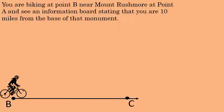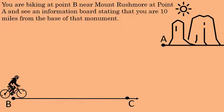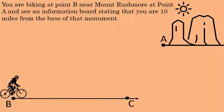Let's say you're biking at a point B that's near Mount Rushmore that we'll say is located at point A. There's an information board that states you are currently 10 miles away from the base of the Mount Rushmore monument.